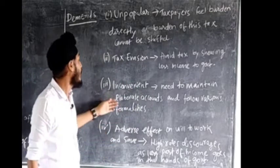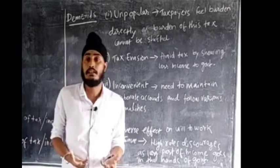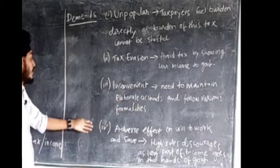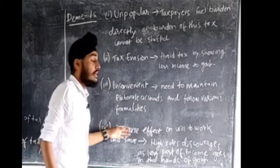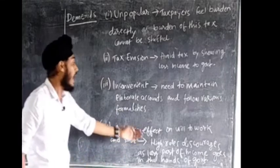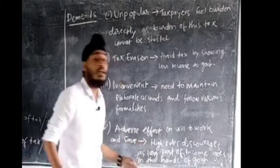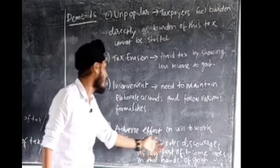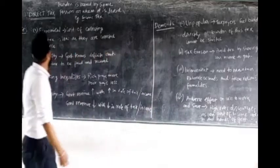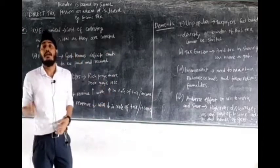Number three is inconvenient — individuals who pay direct tax need to maintain many accounts and follow many formalities, so direct taxes are inconvenient. Number four, direct tax has an adverse effect on the will to work and save, as a high rate of tax will discourage individuals since the last part of their income goes to the government.